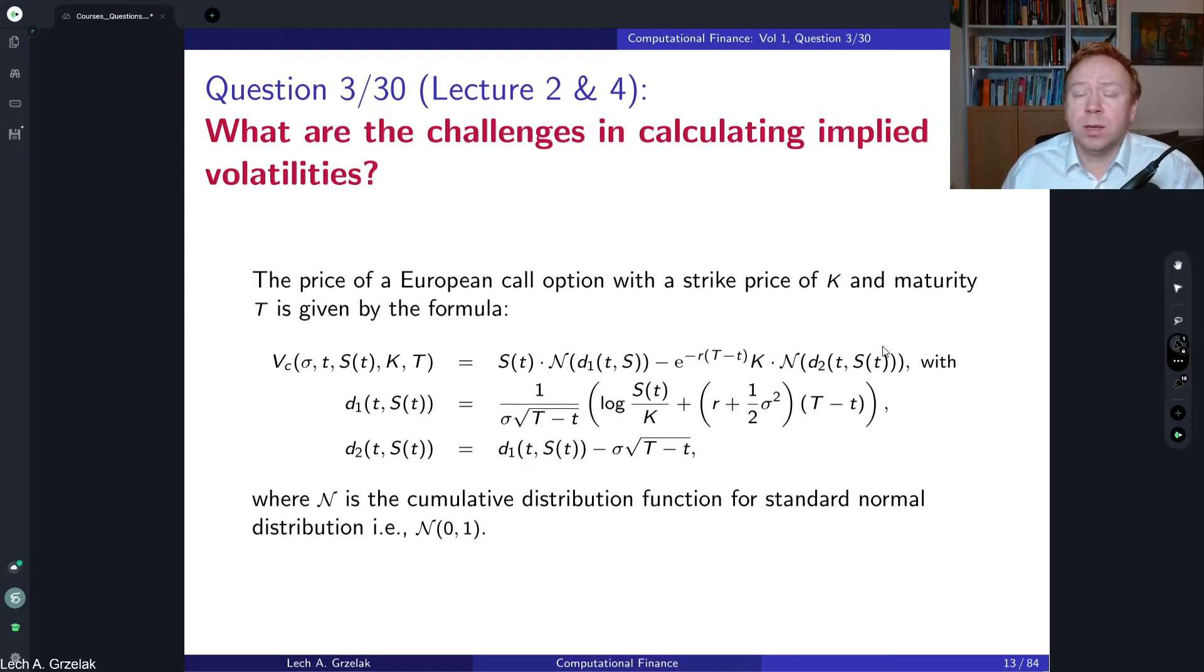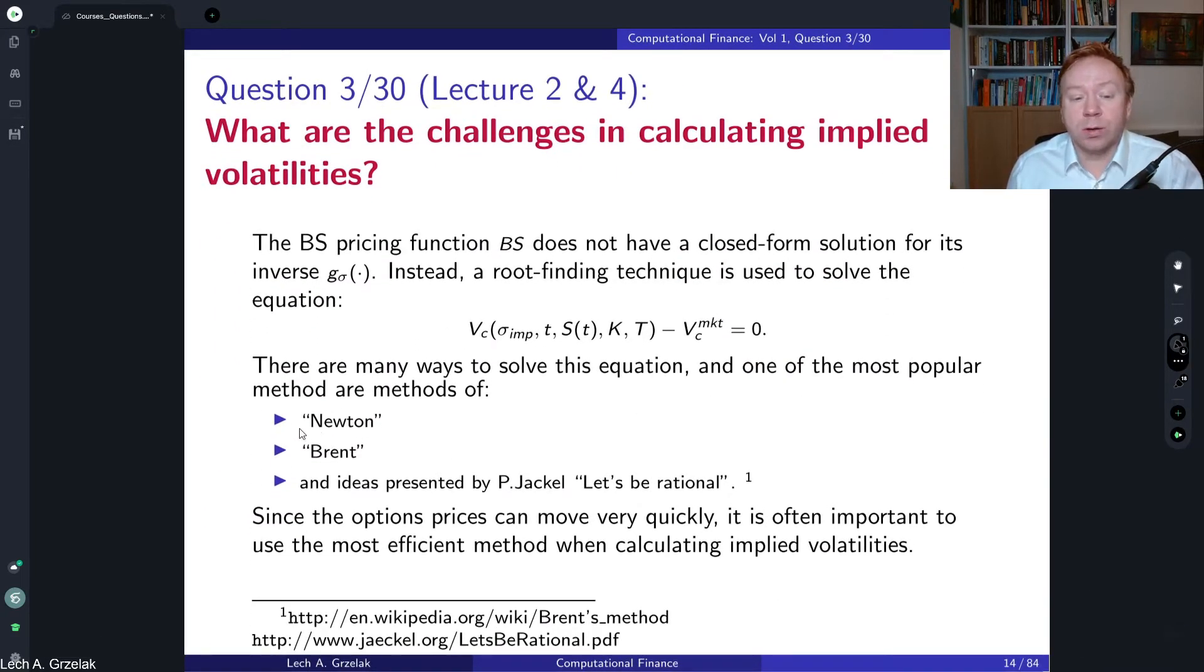For that reason, the calculation of implied volatilities takes place using numerical routines. And those numerical routines are typically Newton's, the very simple approach, Brent's method, and multiple modern methods exist. The one I like is Let's Be Rational by Peter Jäckel, who really shows how with a few iteration steps we can get quite accurate, very accurate implied volatility.